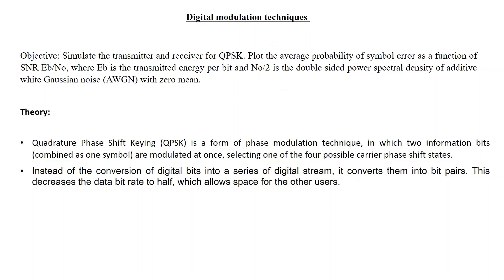The objective of the experiment is to simulate the transmitter and receiver for QPSK. QPSK stands for Quadrature Phase Shift Keying, and the goal is to plot the average probability of symbol error as a function of signal-to-noise ratio Eb/N0, where Eb is the transmitted energy per bit and N0/2 is the double-sided power spectral density of additive white Gaussian noise with zero mean. So the objective is to plot the symbol error rate of QPSK with respect to SNR.